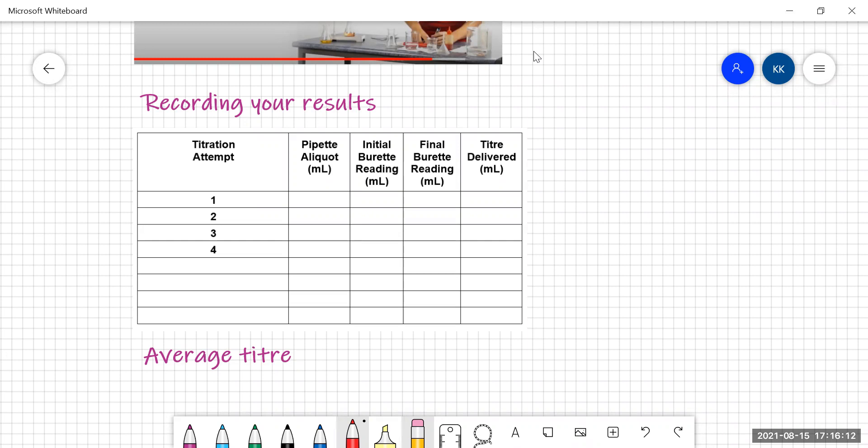So I'm doing my titration. My pipette aliquot every time is going to be 10.0 mils. I've filled up my burette and my initial volume is 0.00 mils. Notice I've got two decimal places. You must read the burette to two decimal places. I perform my first titration. Because I know that the titer is going to be around 10 mils, I'm just going to dump eight mils straight in.